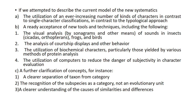The new systematics has provided further clarification of concepts: first, a clearer separation of taxon from category; second, the recognition of subspecies as a category that is not an evolutionary unit; and third, a clearer understanding of the causes of similarities and differences among organisms. If animals are similar or different, there are specific biological reasons underlying those similarities and differences. Based on these facts, we identify animals into species through detailed analysis using the current model of the new systematics.